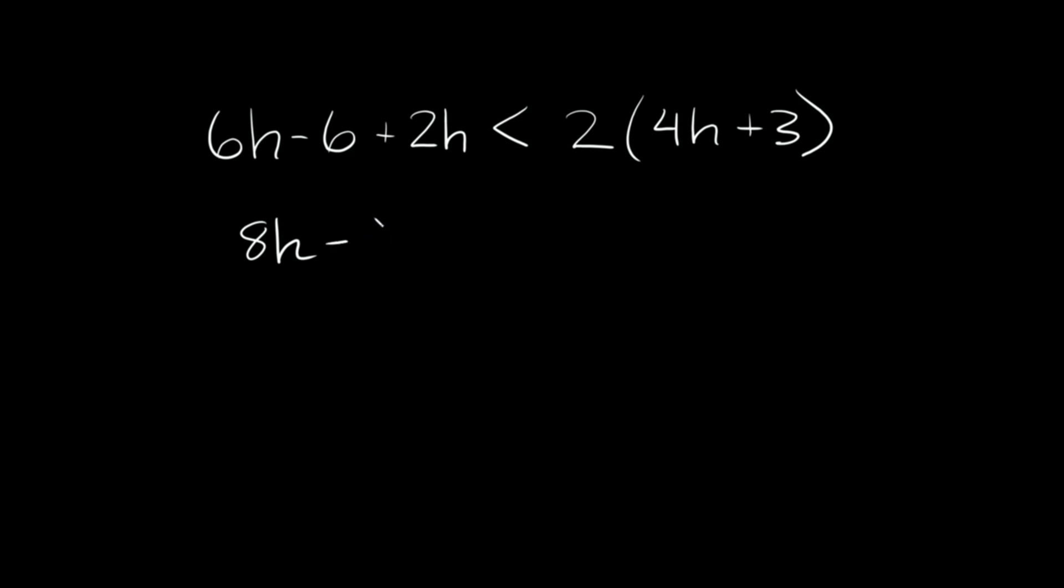And then we have the less than, and then here again we could divide this whole side by 2 and this whole side by 2 because 2 divides evenly into all these numbers, but I'm going to go the other direction this time and just distribute it. So we're going to do 2 times 4h so that's equal to 8h and 2 times 3 is equal to 6, positive 6, right?